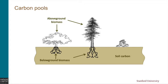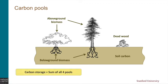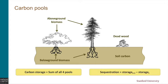Then there is soil organic matter, which is the organic component of soil and represents the largest terrestrial carbon pool. And finally, dead organic matter, which includes litter as well as lying and standing dead wood. Carbon storage is simply the sum of the carbon stored in these four pools. Carbon sequestration is the difference between storage at a certain point and storage at a previous point in time.